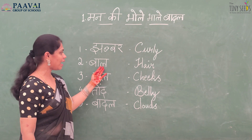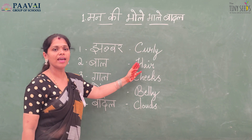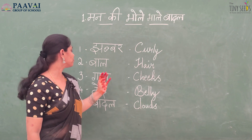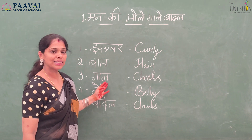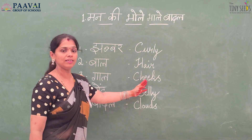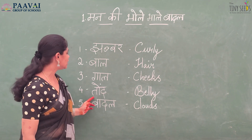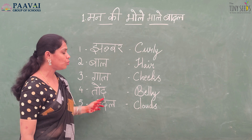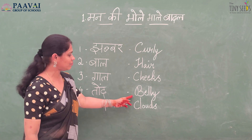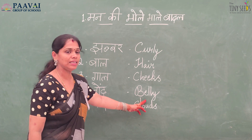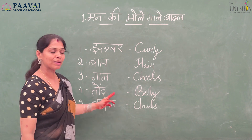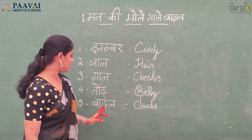Baal means hair, H-A-I-R. Gaal ka matlab hai cheeks, C-H-E-E-K-S. Tond ka matlab — jokar ka tond — that one is belly, B-E-L-L-Y. Tond ka matlab hai belly.